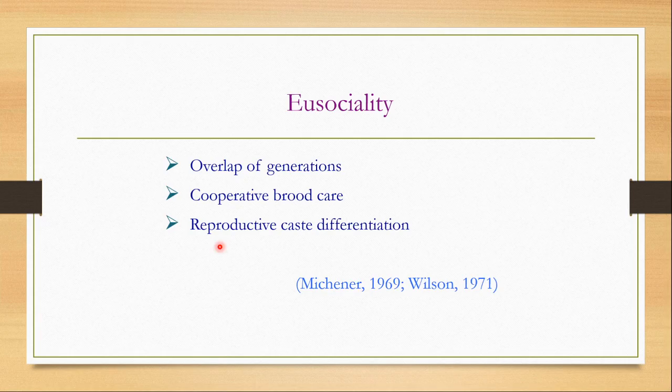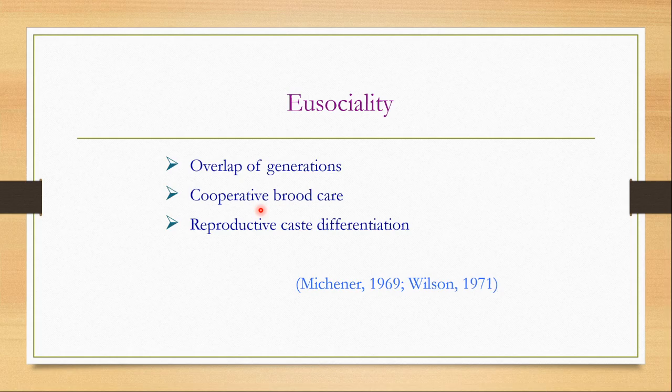All termites are eusocial. When group living organisms show three characters, they are known as eusocial. The first character is overlap of generations, which means that more than one reproductive generation should live together in the group. Then there should be cooperative brood care — they should take care of their brood or offspring in a cooperative manner. Different individuals should perform different colony maintenance activities so that they can take care of the brood in an efficient manner.